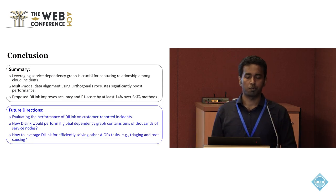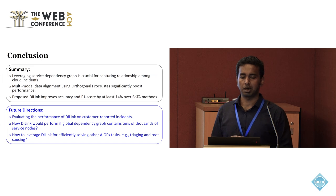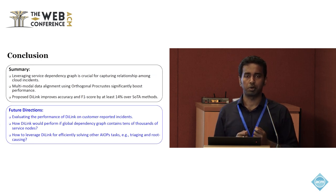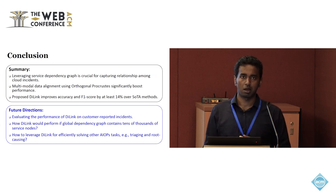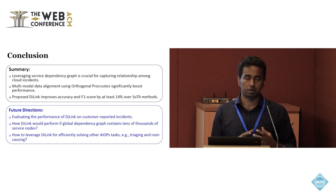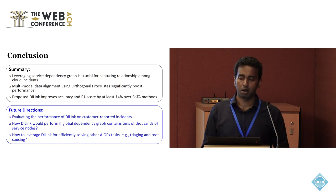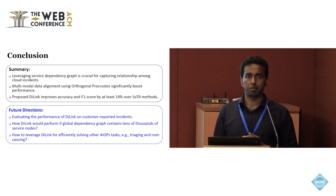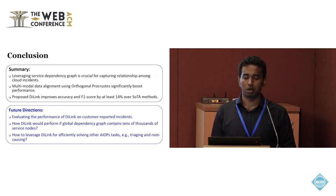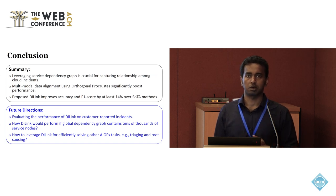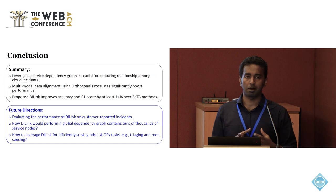In summary, we found that leveraging dependency graph data is very important for improving the accuracy of incident linking. An alignment using the orthogonal Procrustes method can provide a significant boost in performance, achieving a 14% gain. In future work, we want to evaluate the performance of the DI-Link model on customer-reported incidents and also test how much scalability we can achieve with this method.